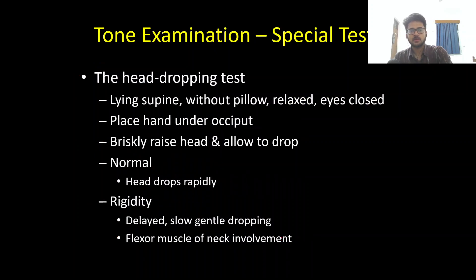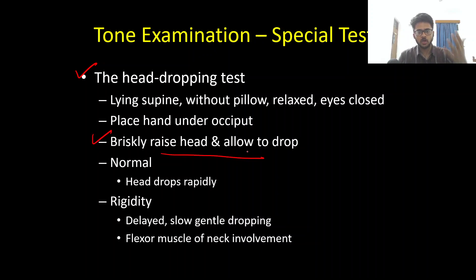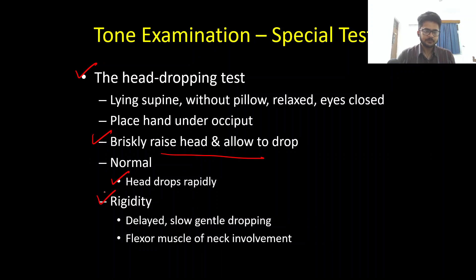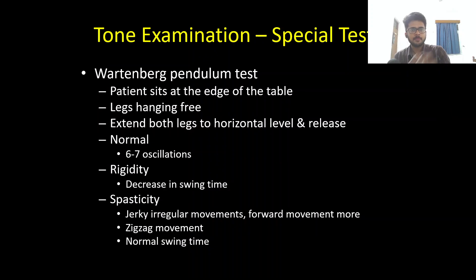Another named test is the head dropping test. We make the patient lie supine on the bed without a pillow, relaxed, with eyes closed. We place one hand under the occiput and briskly raise the head and allow it to drop freely. Normally the head rapidly drops, but if the patient has rigidity — extrapyramidal involvement — there will be a delayed and more slow, gentle dropping, because of flexor muscle neck rigidity.